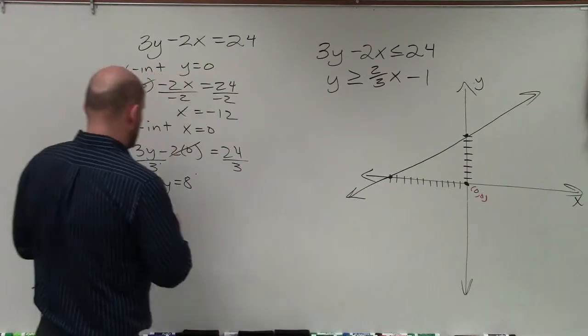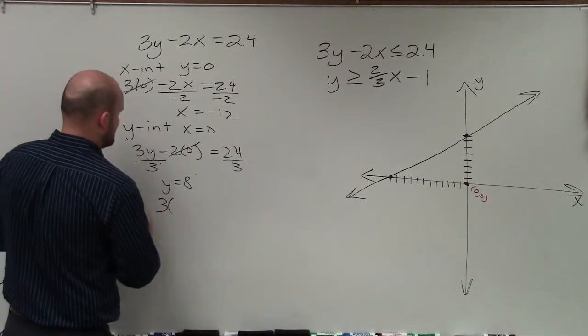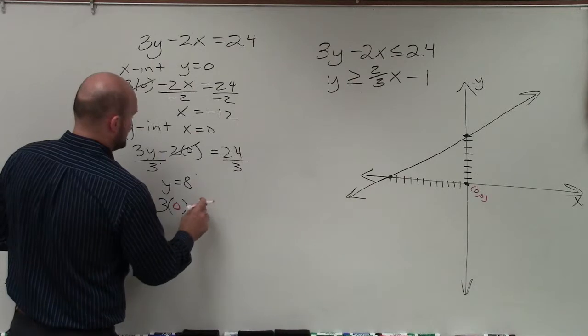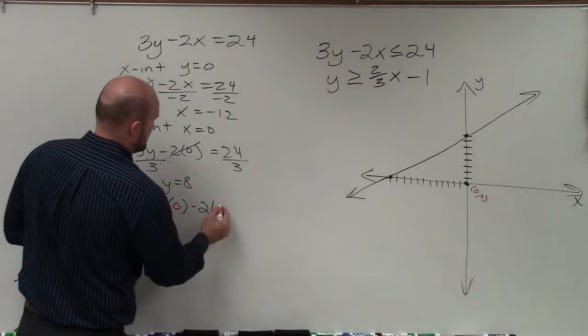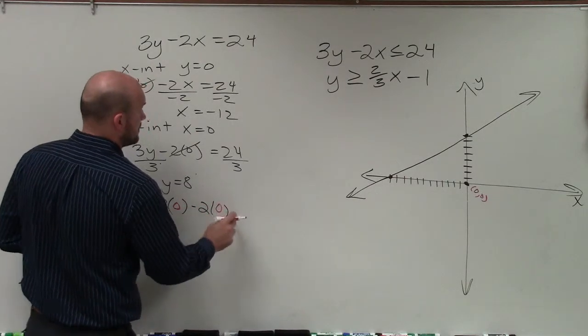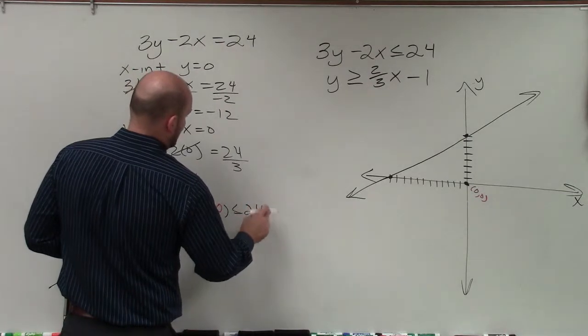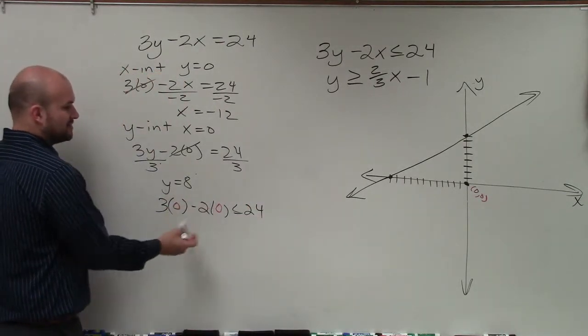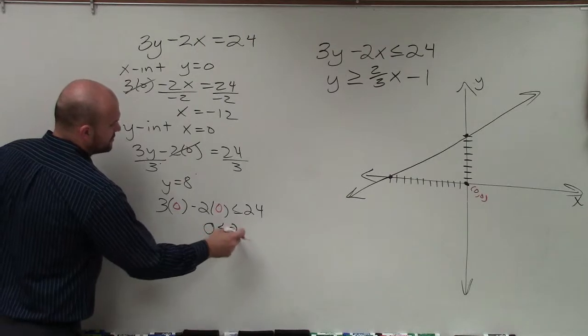So I can just plug in 3 times 0 minus 2 times 0 is less than or equal to 24. Well, 3 times 0 is 0, minus 2 times 0 is 0, so 0 is less than or equal to 24.